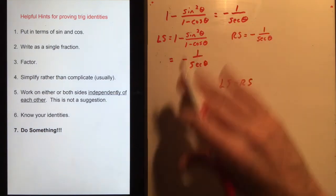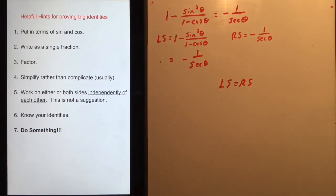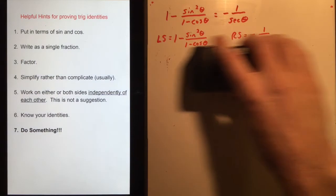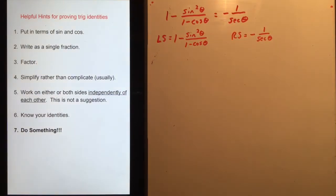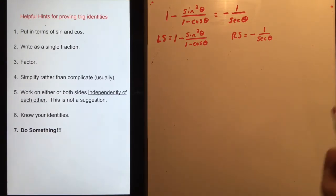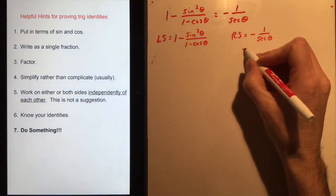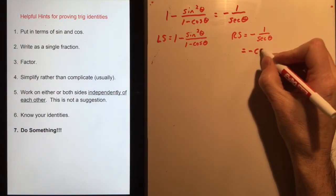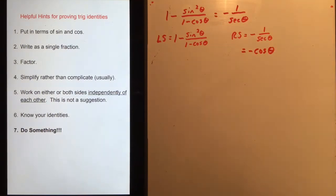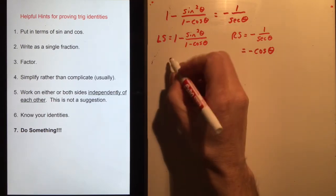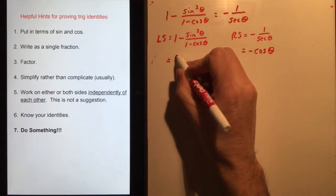Let's look at this trig identity and use our helpful hints to get the left side and right side to look the same. Put everything in terms of sine and cosine: the left side is already in those terms. Secant is the reciprocal of cosine, so the right side becomes negative cosine theta. They don't look very similar yet.